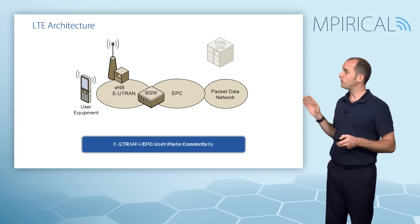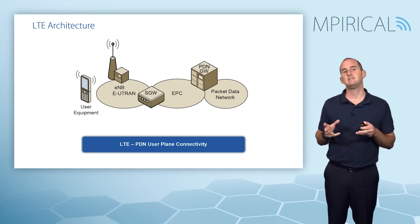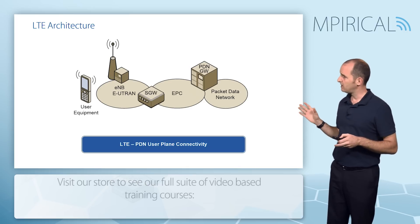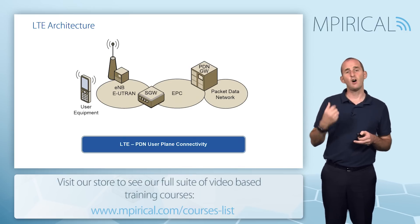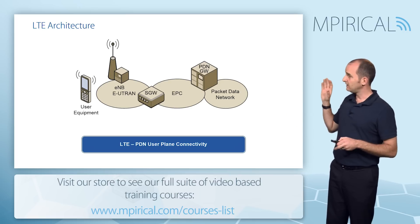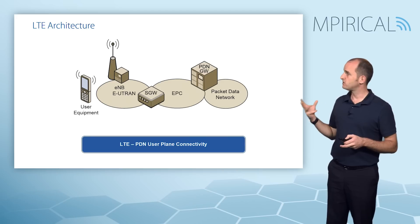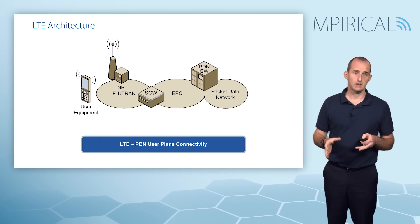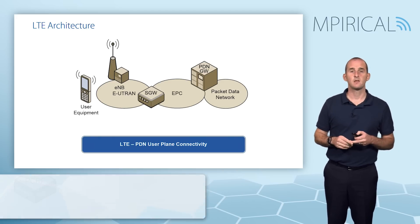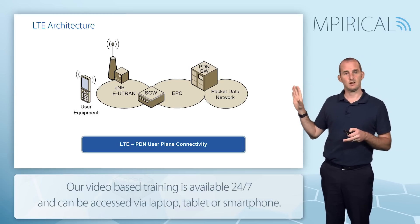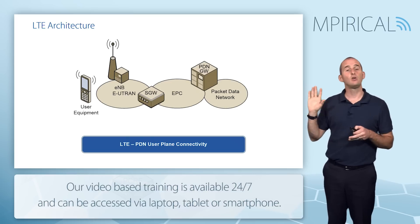Moving further into the core, we encounter the Packet Data Network Gateway, which provides connectivity between the Evolved Packet Core and the packet data network. Collectively, the E-Node B, the Serving Gateway, and the PDN Gateway form our user plane. This is all user plane oriented — but we also need control.